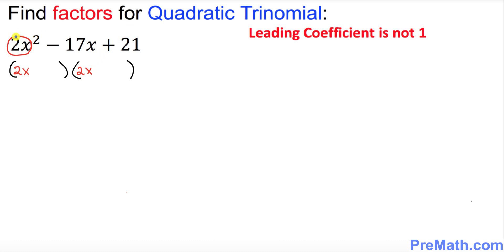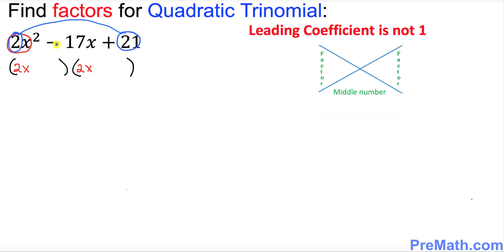So the next step, I want you to look at these end numbers 2 and 21. I want you to multiply 2 times 21, which is going to be 42. So put down that 42 right up here on the top in this diagram, and the middle number over here is negative 17. I want you to put it at the bottom of this diagram right up here.